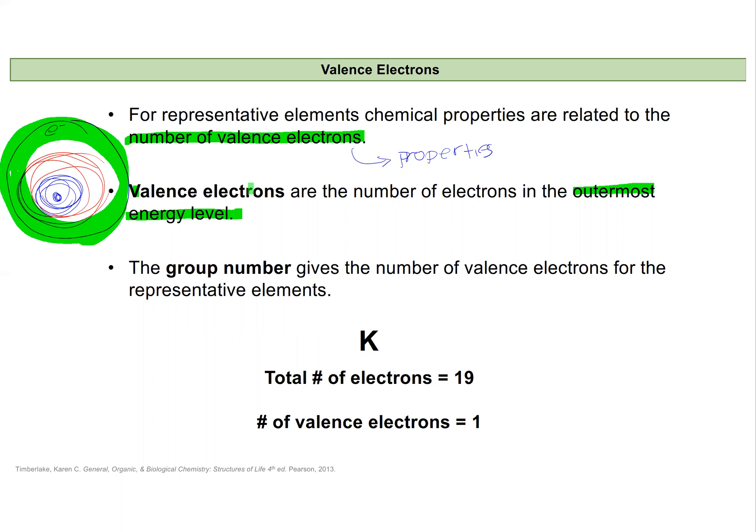The group number from the periodic table will give you the number of valence electrons if you're using the version that says A after it. So for an element like potassium, which is found in our first column 1A, it'll have a total of 19 electrons, most of which are going to be found in this inner part of the atom, but one of them will be the one that will have the ability to occupy space the furthest from the nucleus, and that will be our one valence electron.